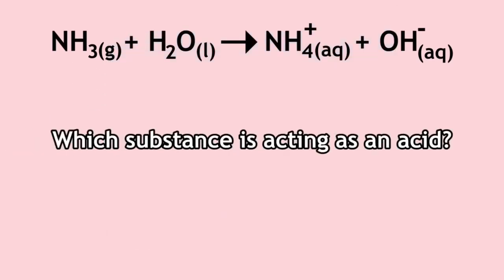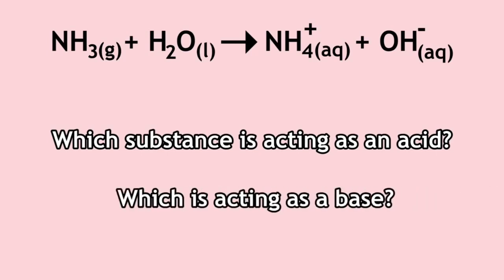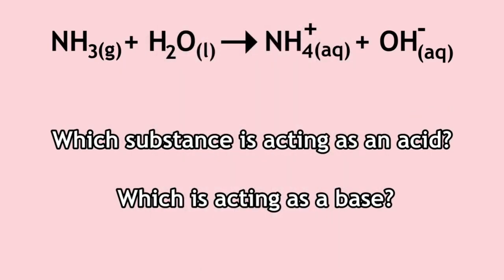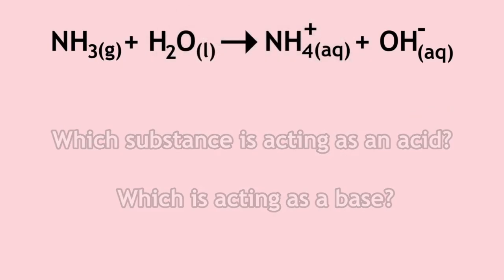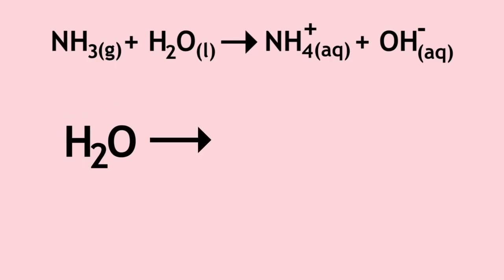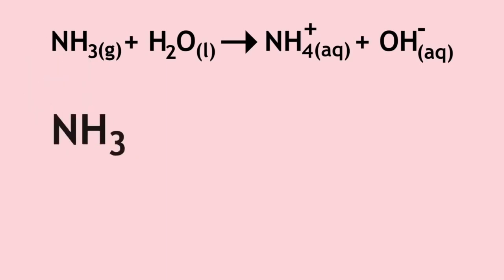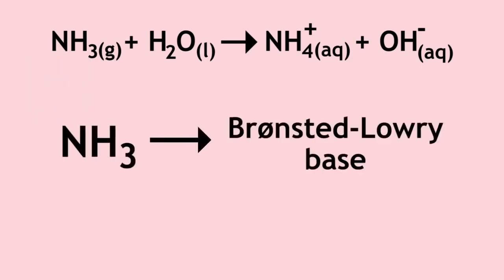Can you figure out which substance is acting as an acid in this example? Which is acting as a base? Please pause the lesson to think about this and resume when you are ready. In this example, water acts as a Bronsted-Lowry acid because it releases a proton. Ammonia acts as a Bronsted-Lowry base because it accepts a proton.